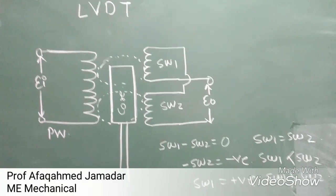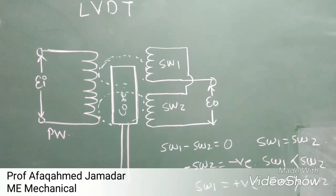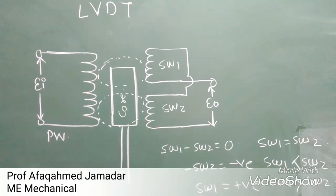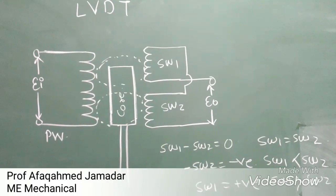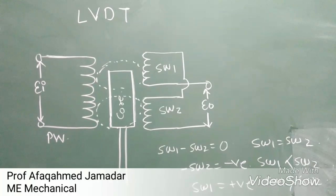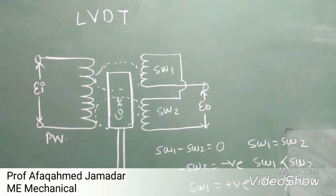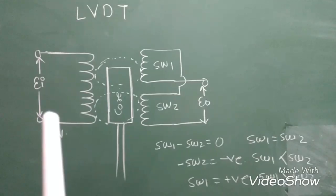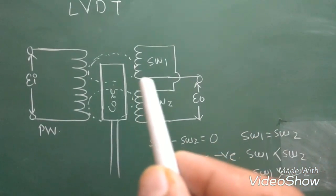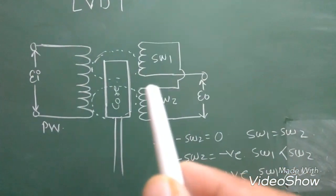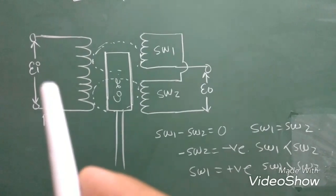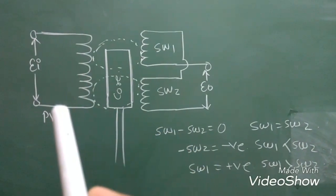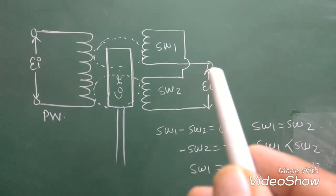Hi, this is Professor Afag. Today we will discuss about LVDT, that is Linear Variable Differential Transducer or it may be called as Transformer. Here in LVDT, we are having two different things. First is primary winding which is located here, and we are having two different secondary windings — secondary winding 1 and secondary winding 2. We need to supply the voltage across the primary winding and the output voltage is generally measured at the secondary winding.